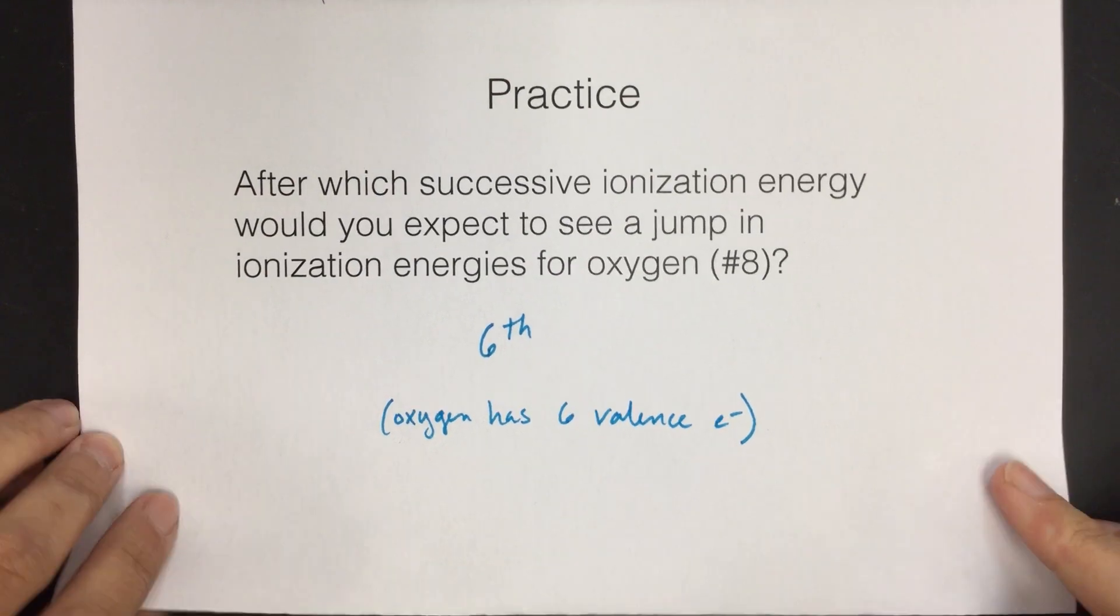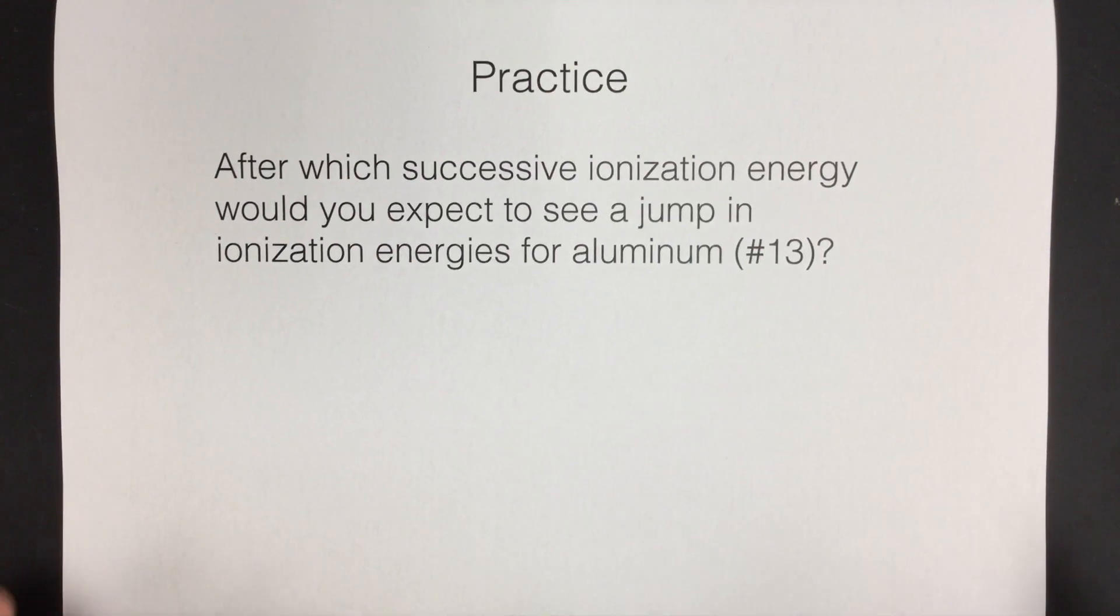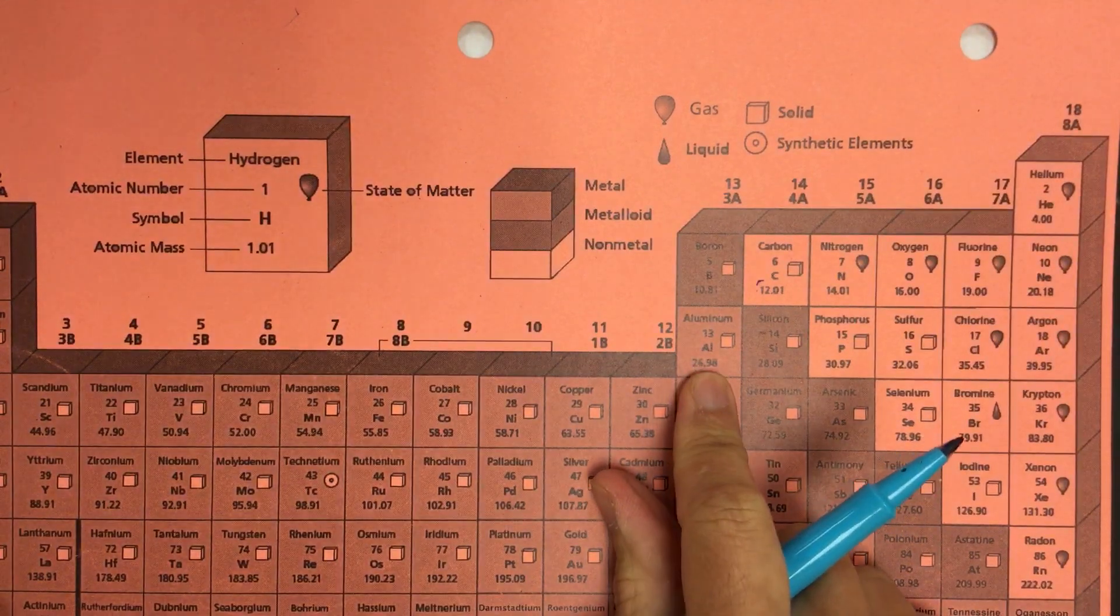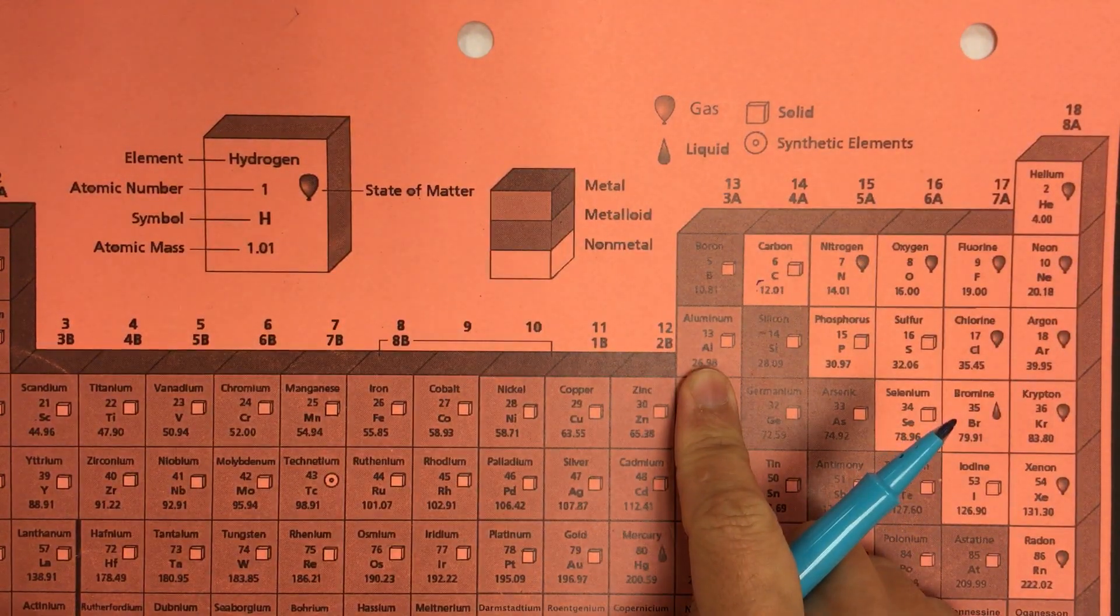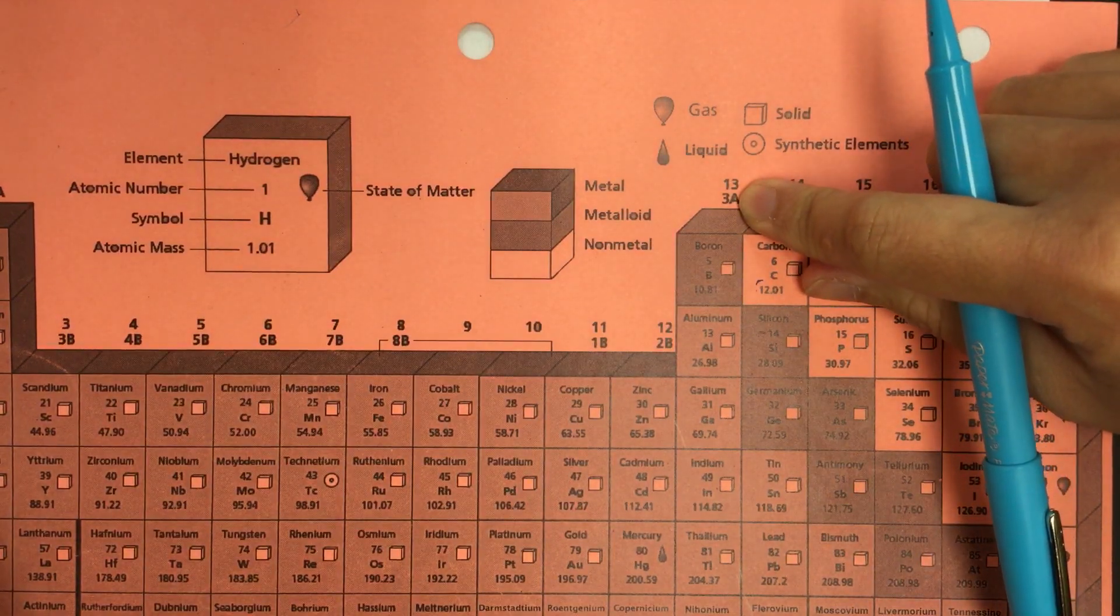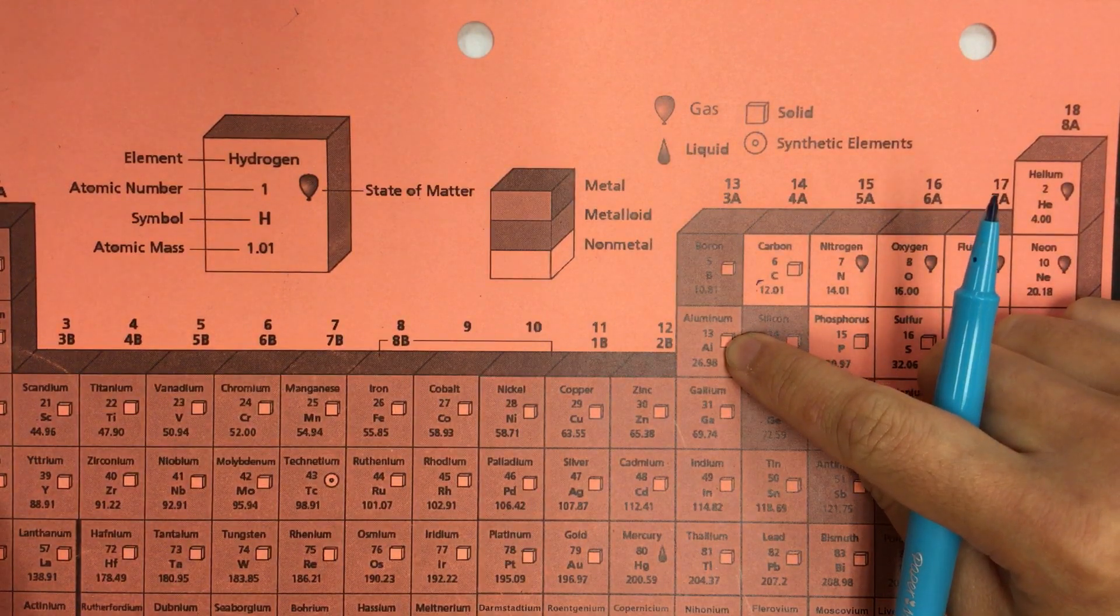So if we look at another one, after which successive ionization energy would we expect to see a jump in ionization energies for aluminum? We just need to find aluminum and figure out how many valence electrons it has. So aluminum's here. Remember, our trick for figuring out valence electrons is to just look at the A group number. So it's group 3A, which means aluminum, and everything else in this group has three valence electrons.